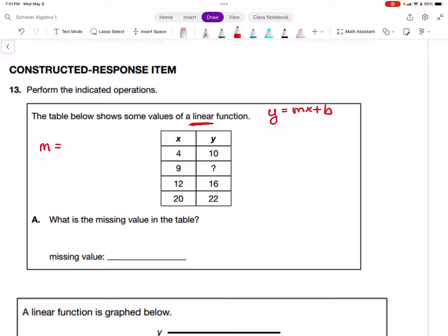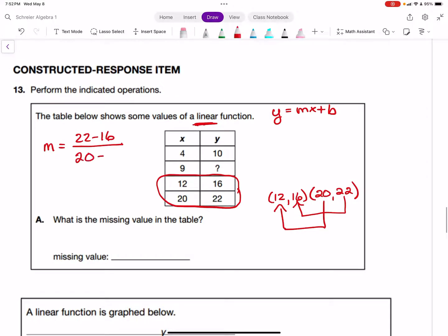I'm going to focus on these two points to find a numerical value for the slope. The points are (12, 16) and (20, 22). We find slope by taking y2 - y1, or 22 - 16, over 20 - 12. On top, 22 - 16 is 6; on bottom, 20 - 12 is 8. So 6/8 reduces down to 3/4. The slope is 3/4.